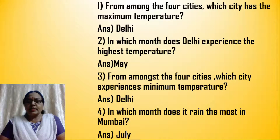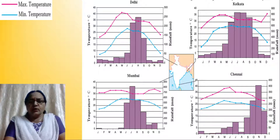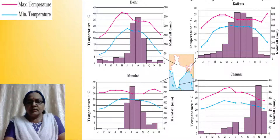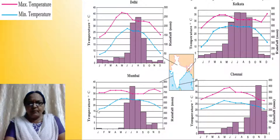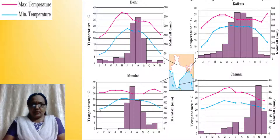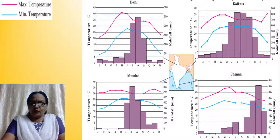From amongst the four cities, which city experiences the minimum temperature? Minimum means the lowest. You look at the blue line graph. Delhi shows about 6 degrees, Kolkata about 9, Chennai about 21, and Mumbai about 17. So which city shows the lowest temperature? It is of course Delhi.